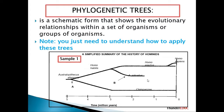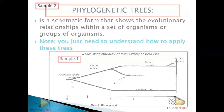There are a lot of questions we can ask. For example: which one is the common ancestor of all these species? The answer is Australopithecus afarensis. Now let's go to another phylogenetic tree and try to interpret it.